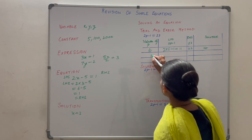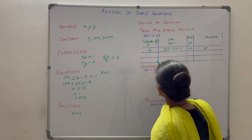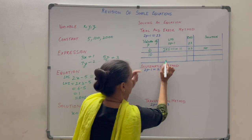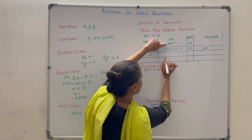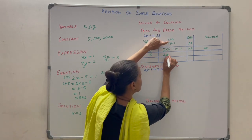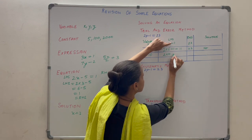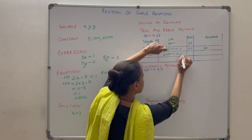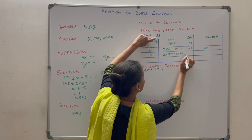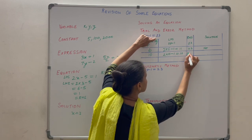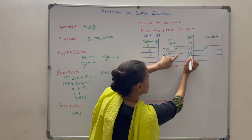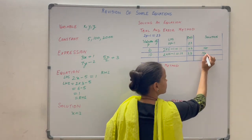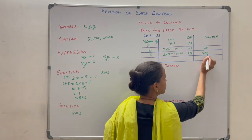Now let us take p equals 10. Substituting: 2 into 10 is 20, minus 1 is 19. On the right hand side you have 23. Is left hand side equal to right hand side? No. So it is not the solution of the equation.